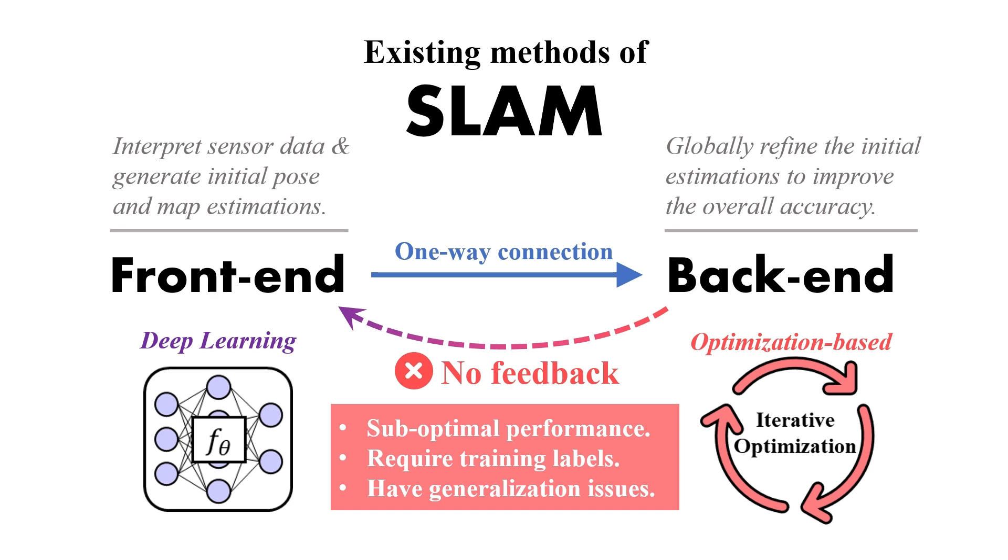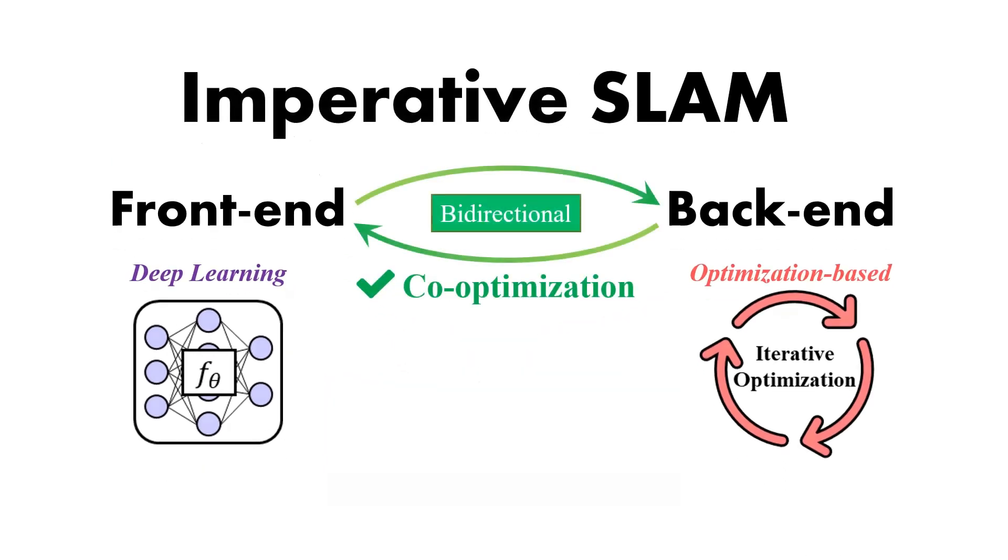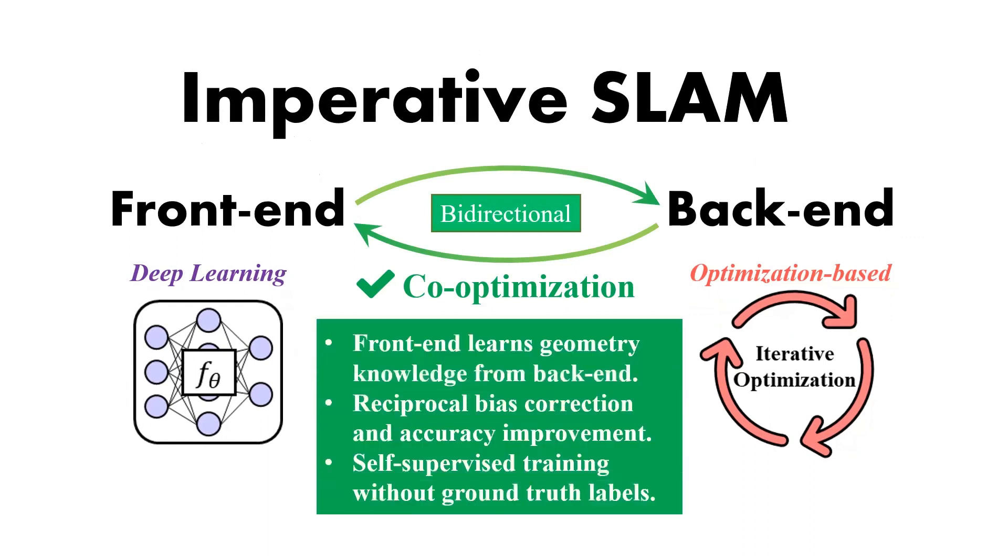To address these limitations, we present Imperative SLAM, a novel SLAM system that establishes a bidirectional connection between the front-end and back-end and achieves co-optimization through imperative learning. In our framework, the front-end model can learn geometry knowledge obtained from the back-end, which helps it improve toward global consistency. The front-end enhancement can also benefit the back-end, achieving reciprocal bias correction between the two components and better overall accuracy. Furthermore, it achieves self-supervised learning without relying on ground-truth supervision.